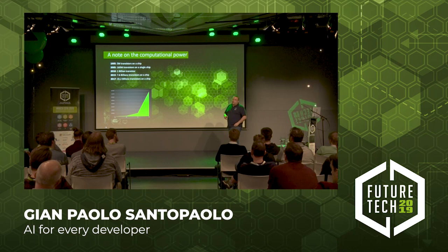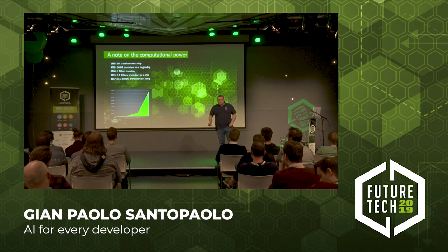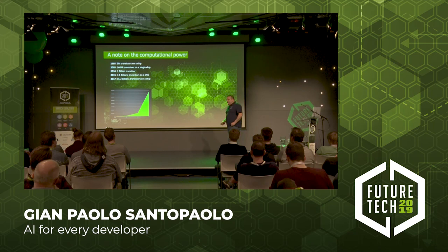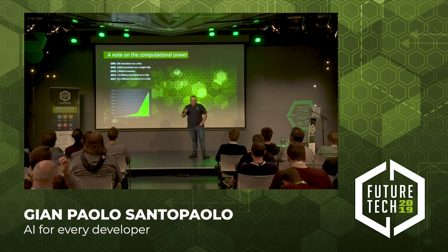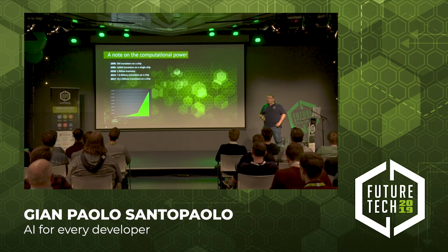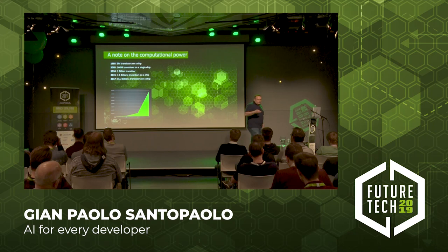Before we start, I want to make an important note on computational power. As you saw in the keynote, computational power for artificial intelligence is the key fact why nowadays we are able to use it. We got something like five million transistors on a chip in 1995 — that was the era of the Pentium One and Windows 95, and five million is the population of New York City at that time.